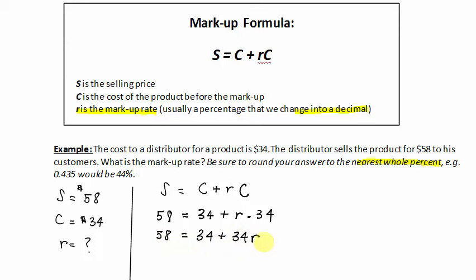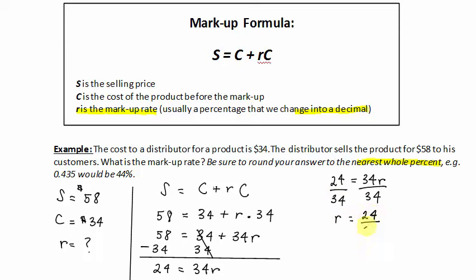This becomes a linear equation of one variable, which we have learned previously. So subtract 34 from each side and we get 24 equals 34R. And here we can divide each side by 34, and therefore R would equal 24 over 34.